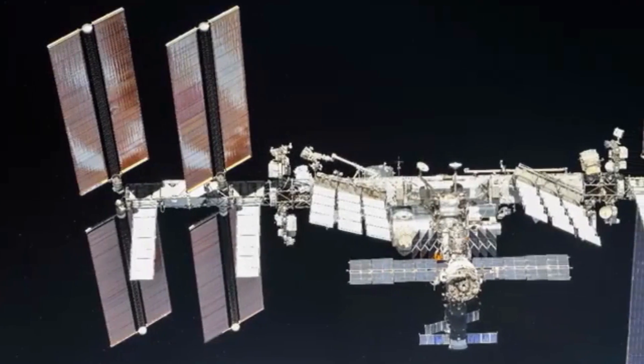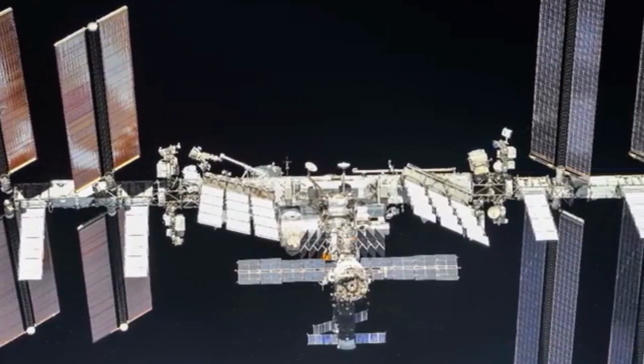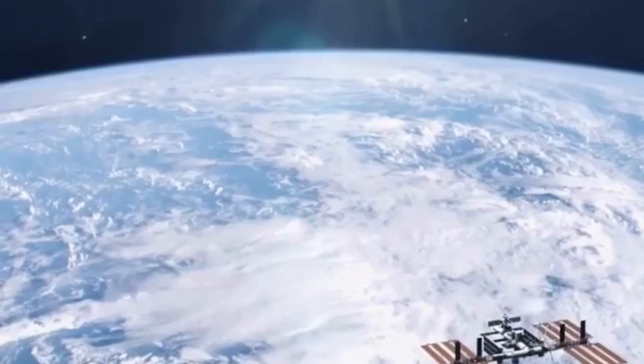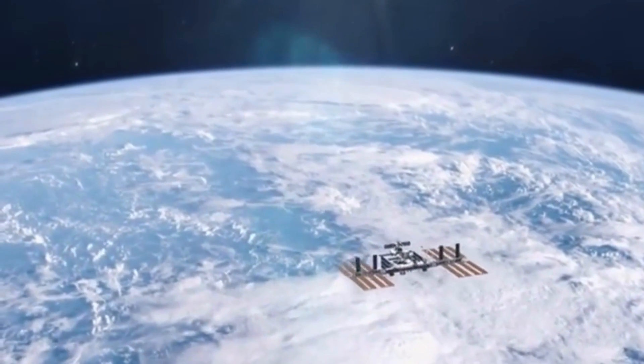4. The International Space Station ISS is the largest human-made structure in space, spanning about the size of a football field, and traveling at a speed of 17,500 miles per hour.